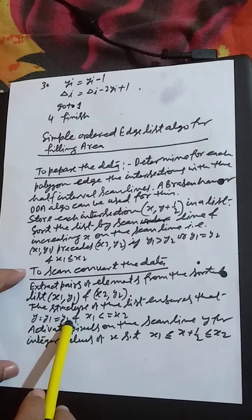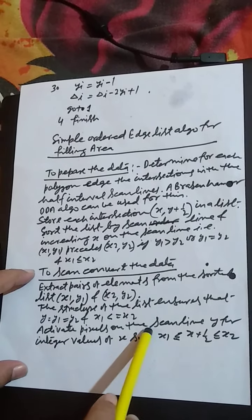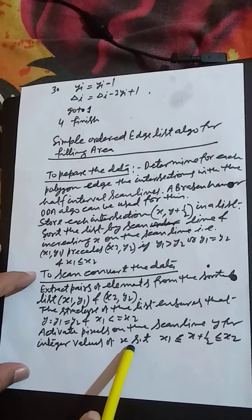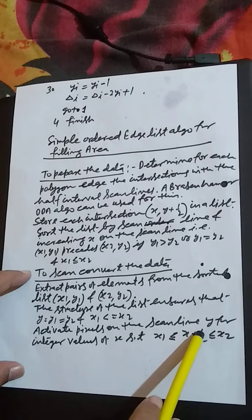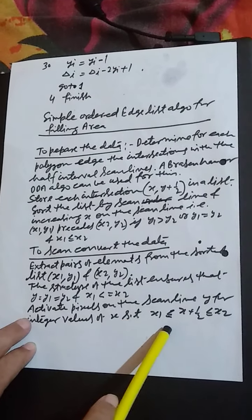Extract pairs of elements from the sorted list X1 Y1 and X2 Y2. The structure of the list ensures that Y is equal to Y1 is equal to Y2 and X1 is less than or equal to X2. Activate pixels on the scan line Y for integer values of X such that X1 is less than or equal to X plus half less than or equal to X2. That's all about today's lecture.